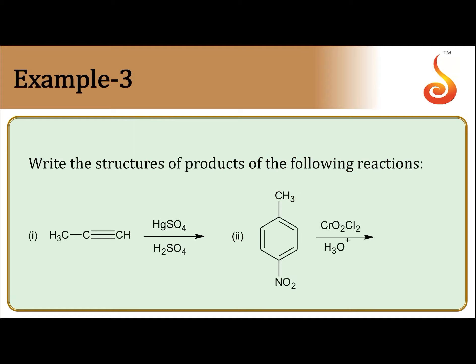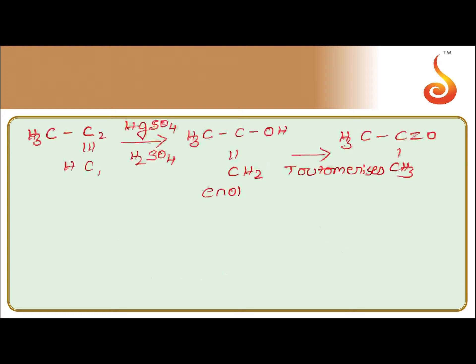So what is the product here? When alkyne is treated with HgSO4 and H2SO4, I will get CH3-C double bond O-CH3. This is hydration of alkyne. What is the second reaction? Para-nitrotoluene, when para-nitrotoluene...